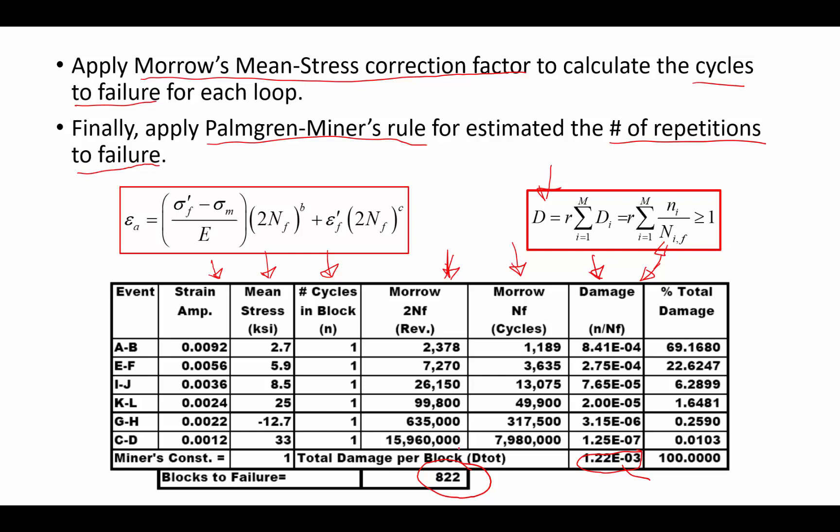There do exist some codes that help you to automatically process data using the rain flow method. I recommend that you go online, do a search for rain flow counting algorithms, and you should be able to find some Fortran codes, some C codes, and even some MATLAB codes for processing this type of data. All right, so that's our third example for variable amplitude loading. I'll see you in the next video.